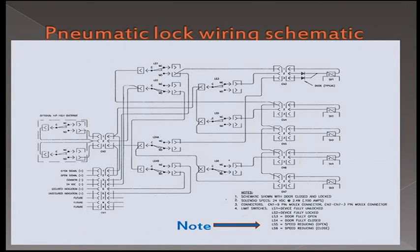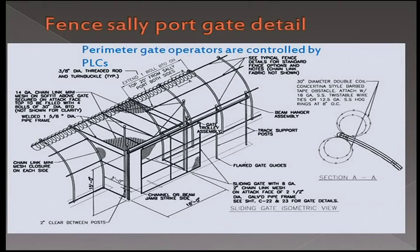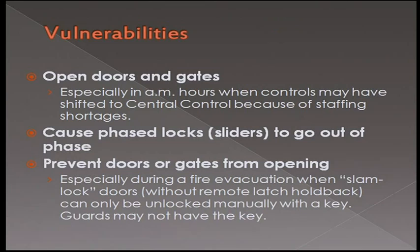The motors on the doors — you can control those and control the speed. You could crank it up and essentially blow out the motors on the doors, so the doors are no longer functional at all. It's called a cascade program, so the doors don't all open or slam at once. We can open doors and gates, cause phase lock sliders to go out of phase. If you can remove the program for the cascade, the speed of the door, you can break the door — when you open it and slam it, those locks are done for the whole prison.